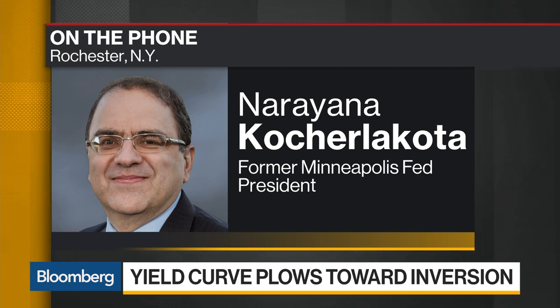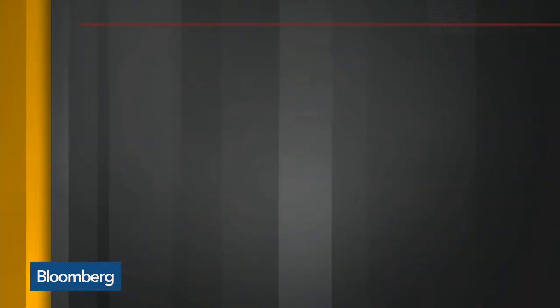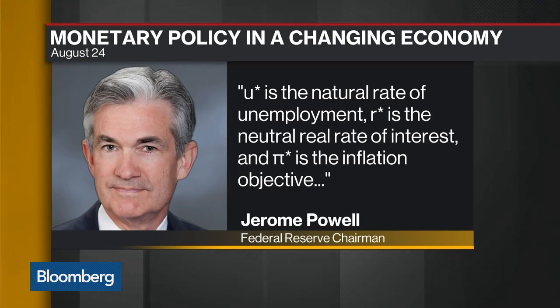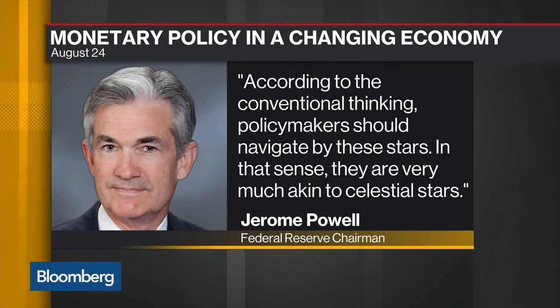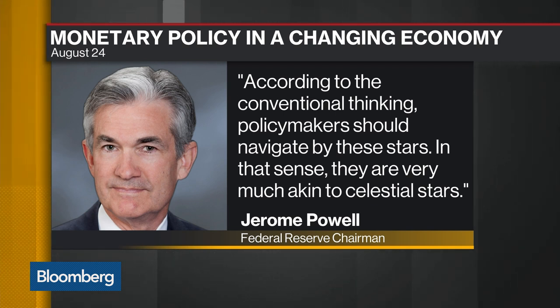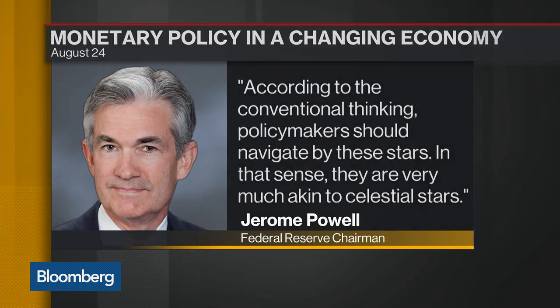Which raises the question: if the yield curve isn't necessarily giving us a clear signal, are other monetary policy models not working as well? Fed Chair Powell talked about u-star — the natural rate of unemployment — r-star, the neutral real rate of interest, and pi-star, the inflation objective. According to conventional thinking, policymakers should navigate by these stars. Do you agree that traditional models like the Phillips curve can't be relied on as a signal for when to hike rates?